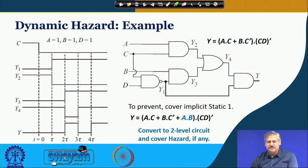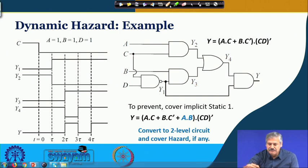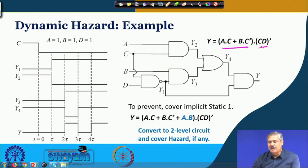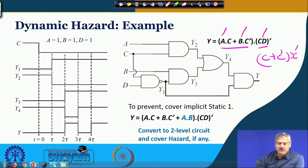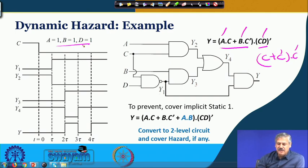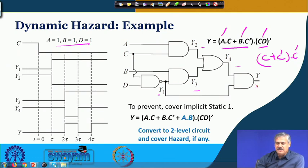Consider an example: the expression is (a-c plus b-c-prime) ANDed with c-d-prime. We examine the situation when a equals 1, b equals 1, d equals 1. You can see a relationship like c-plus-c-prime and c-prime emerging. In the timing diagram, c makes a transition from 1 to 0.